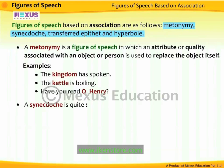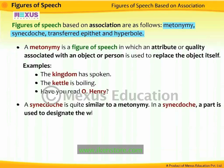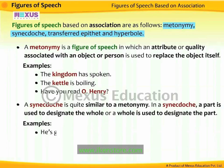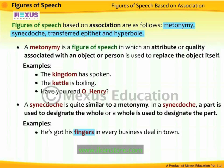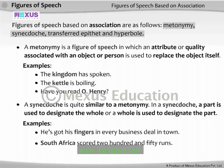A synecdoche is quite similar to a metonymy. In a synecdoche, a part is used to designate the whole, or a whole is used to designate the part. For example, 'he's got his fingers in every business deal in town' — fingers is a synecdoche referring to the person himself, so a part designates the whole. 'South Africa scored 250 runs' — South Africa acts as a synecdoche for the South African cricket team, so a whole designates a part.